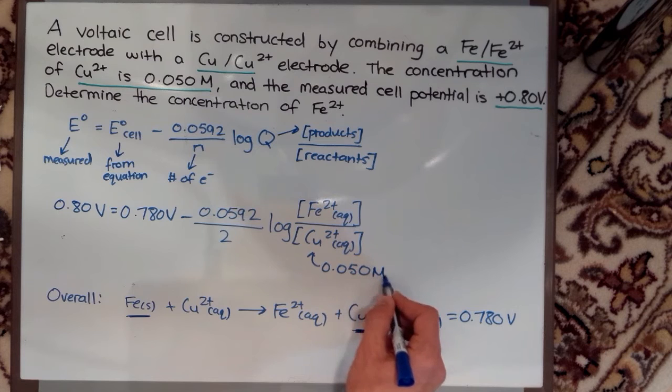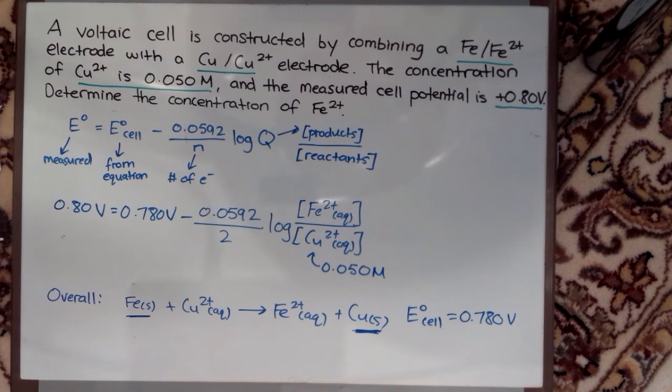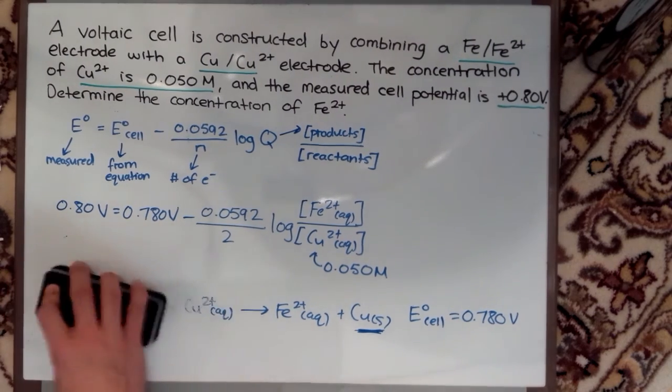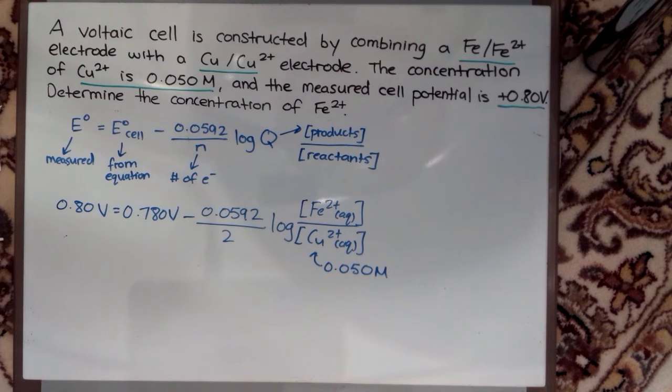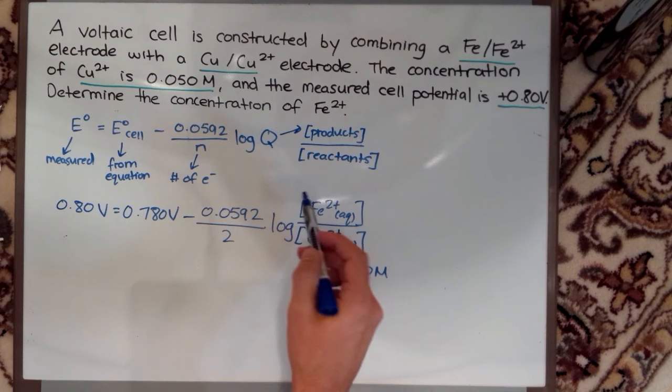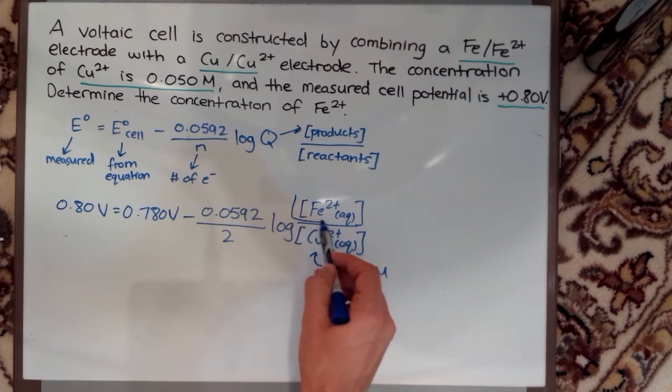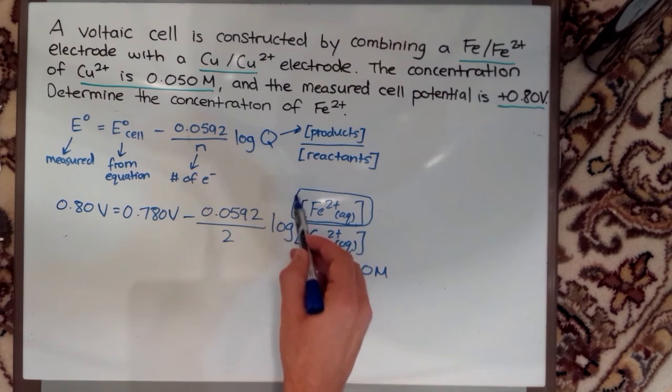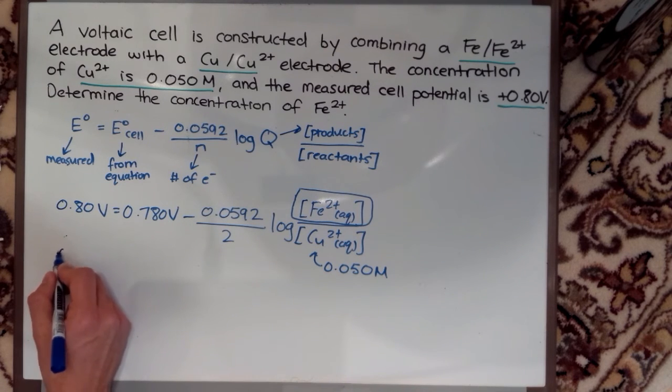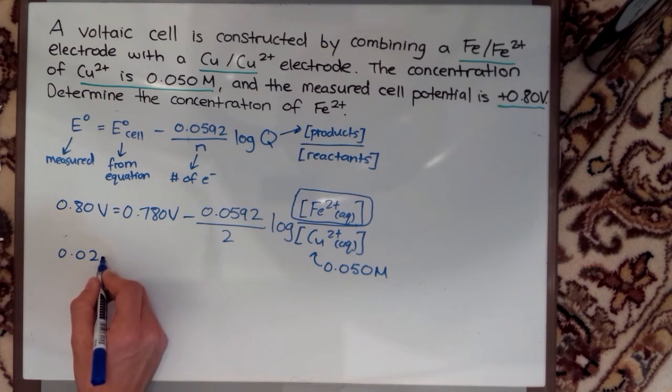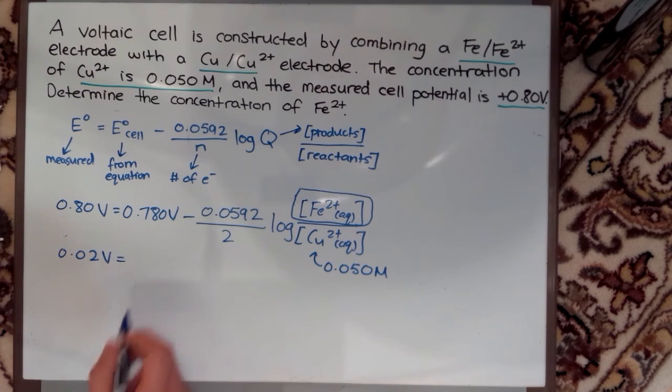So now that we've determined all the parameters in our equation, we don't need it anymore. I'm just going to make some room and get rid of this equation. As you can see, all we have left to do is solve for our concentration of our Fe2+ ion, which is what they were asking us to do.